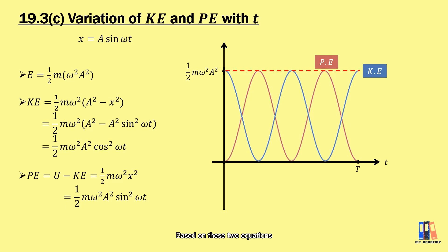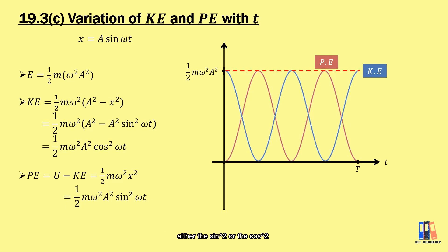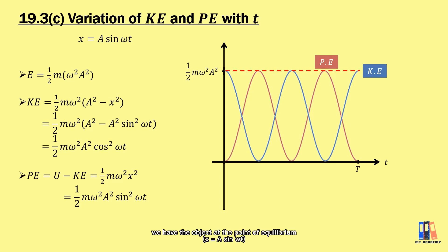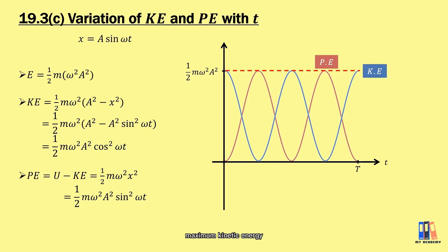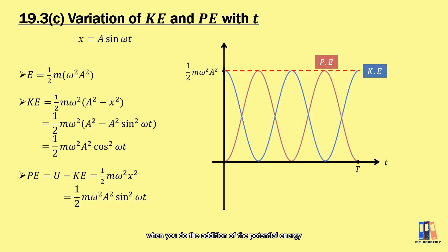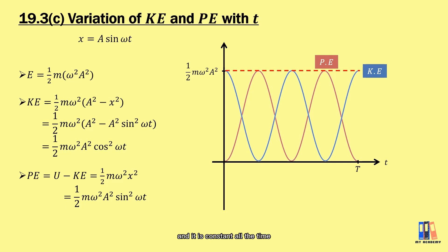Based on these two equations, the variations of kinetic energy and potential energy follow sin² or cos² graphs, depending on the initial position of the object. When t = 0, the object is at the point of equilibrium with maximum velocity and maximum kinetic energy. The graph shows that the sum of potential energy and kinetic energy always equals ½mω²a², confirming it is constant at all times.